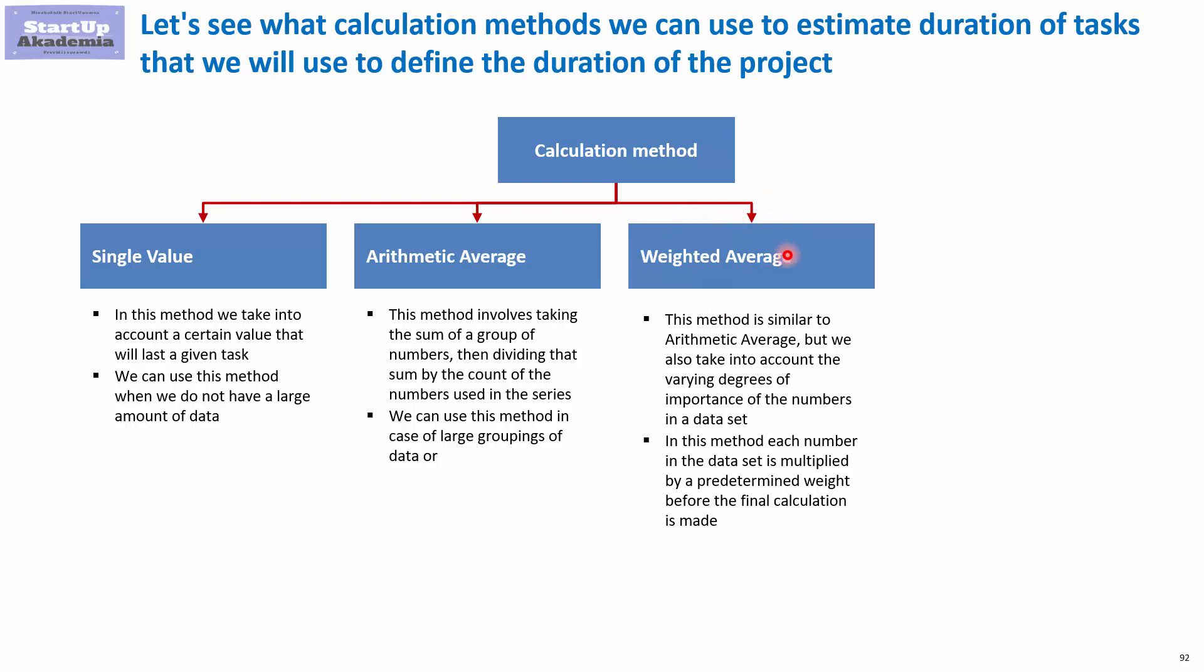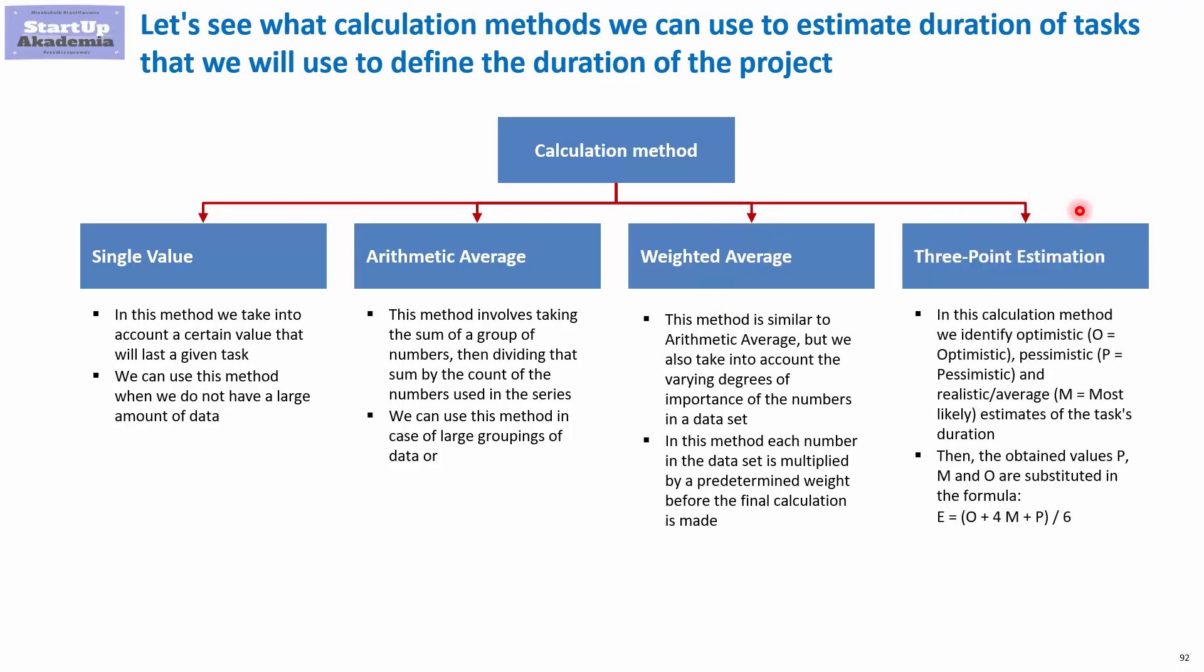A simplified form of weighted average is the three-point estimation, very often used by project managers. Here I have three scenarios: optimistic, pessimistic, and realistic. I calculate weighted average where next to the optimistic and pessimistic estimations I have a weight of one, and for the most likely or realistic scenario I have a weight of four. I divide by six because this is the sum of all weights.